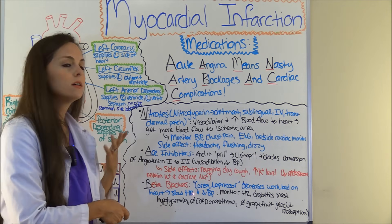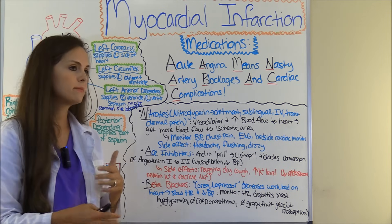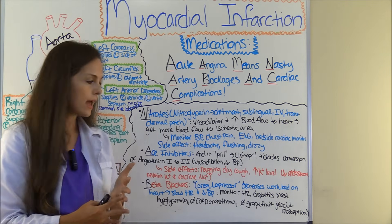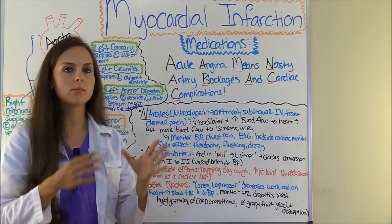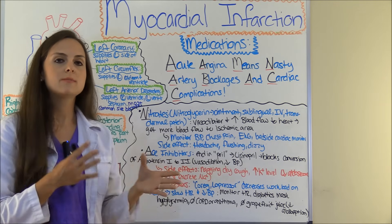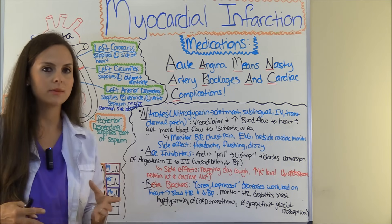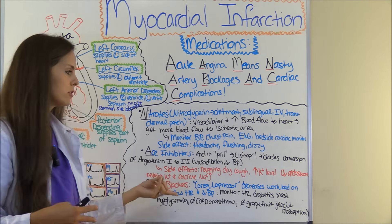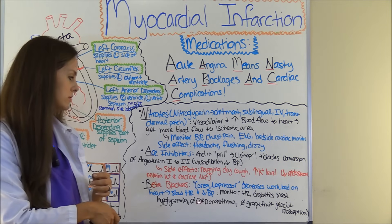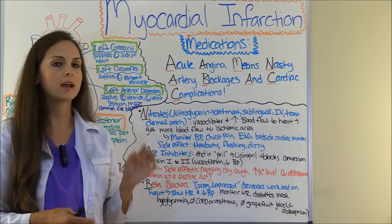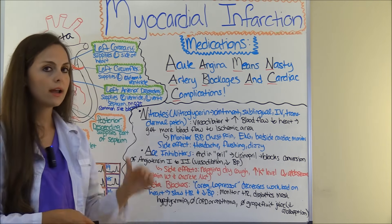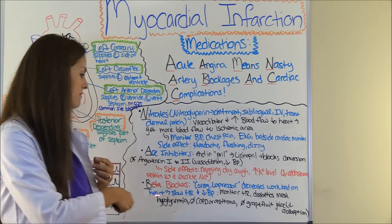Next, B for beta blockers — brand names like Coreg or Lopressor, with generic names ending in -olol. They work by decreasing the workload on the heart, resulting in a slower heart rate and lower blood pressure. As a nurse, monitor their heart rate and make sure it stays within 60–100. Educate diabetic patients that beta blockers can mask the symptoms of hypoglycemia, including tachycardia and sweating, so they need to monitor their blood sugar more closely. Patients with COPD or asthma may not be candidates due to risk of bronchospasm, and patients should not take beta blockers with grapefruit juice as it decreases absorption.